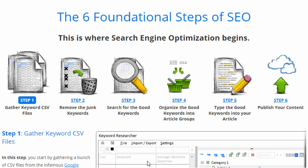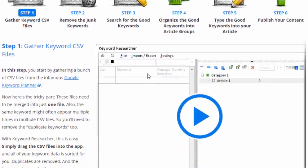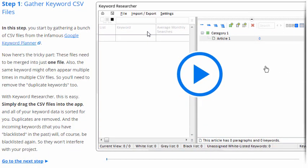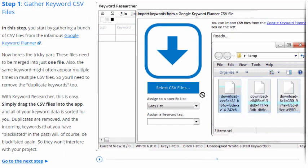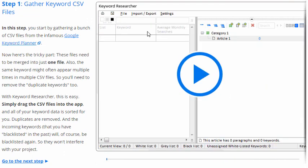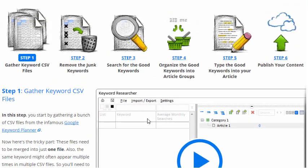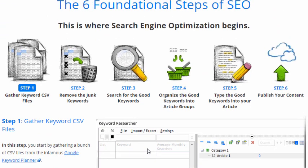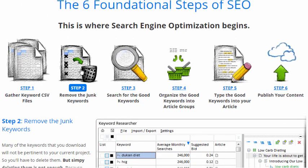Step one is to gather keyword CSV files. Whether you use the Google Keyword Planner or some other tool, you need to get a series of files that reflect the keywords you're going to sort through — some of which you'll end up using on your website. In our animation, we see a person clicking the import button in Keyword Researcher and dragging his files in. You almost always start with CSV files from the Google Keyword Planner.